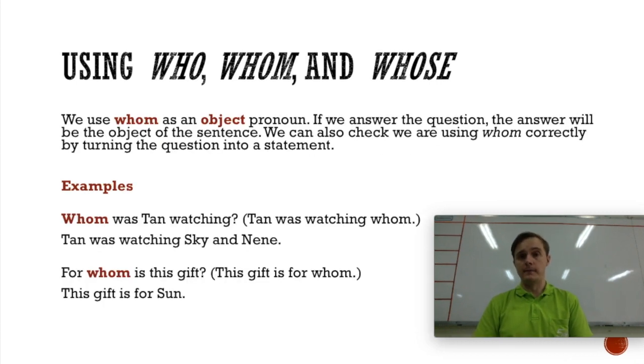Now it's a bit harder using whom. Whom is an object pronoun. If we answer the question with whom, the answer will be the object of the sentence. We could also check that we're using whom correctly by turning that question into a statement. So, whom was Tan watching? Or, Tan was watching whom? So, whom was Tan watching is a question. And just to make it a bit easier, Tan was watching whom? So that tells us that Tan is the subject and whom is the object, even though they're in what you might think is the wrong order. And again, if we answer it, it helps us understand. Tan was watching Skye and Nene. Skye and Nene is the object of this sentence. Tan was the subject.